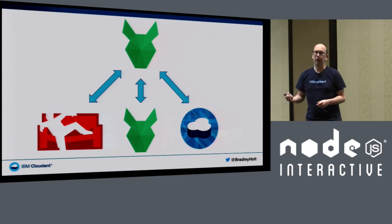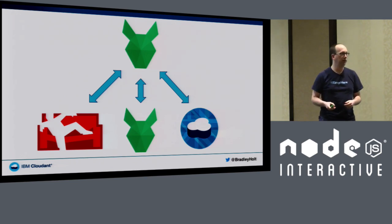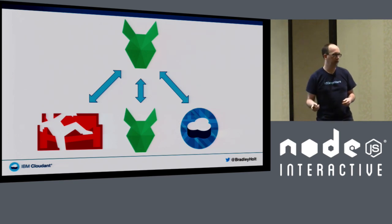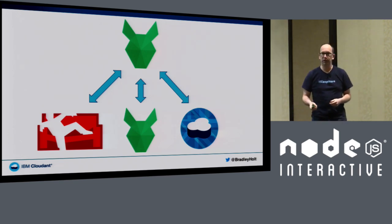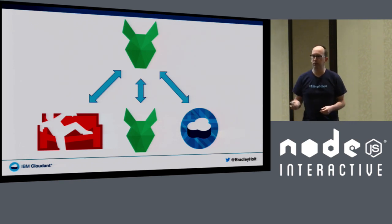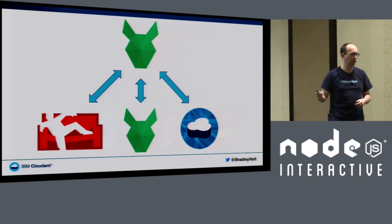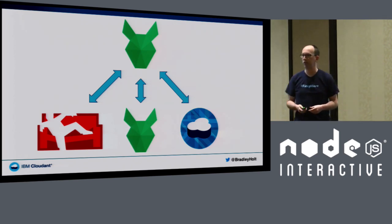The awesome thing about PouchDB is that it can replicate with anything that implements the CouchDB replication protocol. That includes CouchDB, other instances of PouchDB, and Cloudant — which is a product I work on. Cloudant is a fully managed database-as-a-service, a product of IBM acquired from a startup a little while ago.